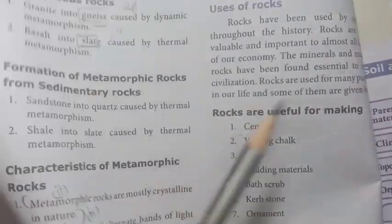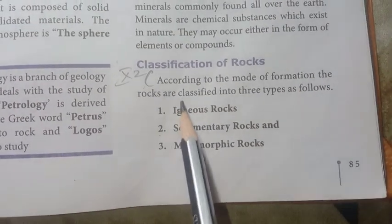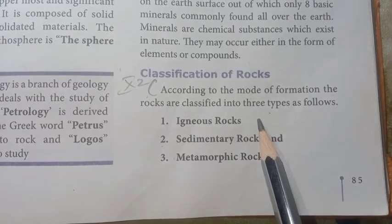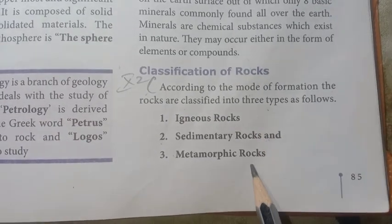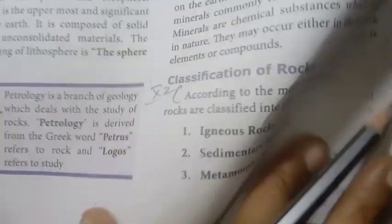Classification of rocks — page number 85. According to the mode of formation, the rocks are classified into three types: igneous rocks, sedimentary rocks, and metamorphic rocks.